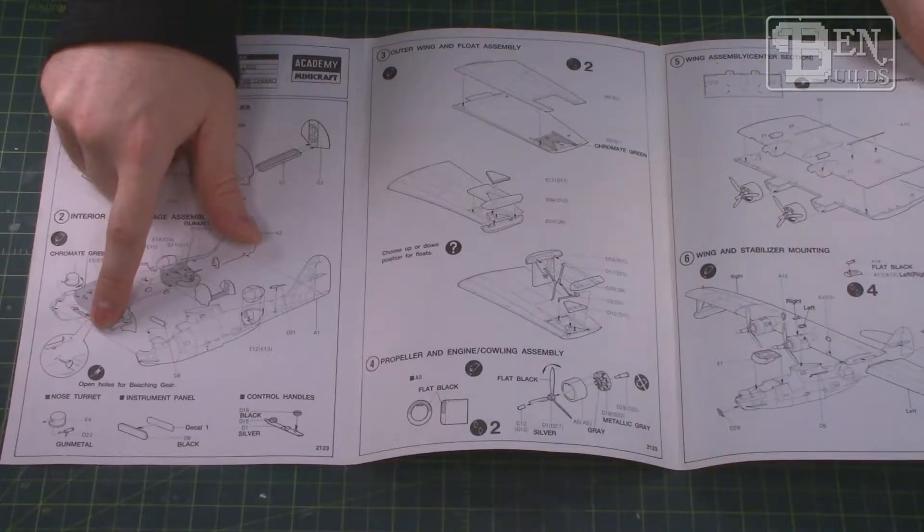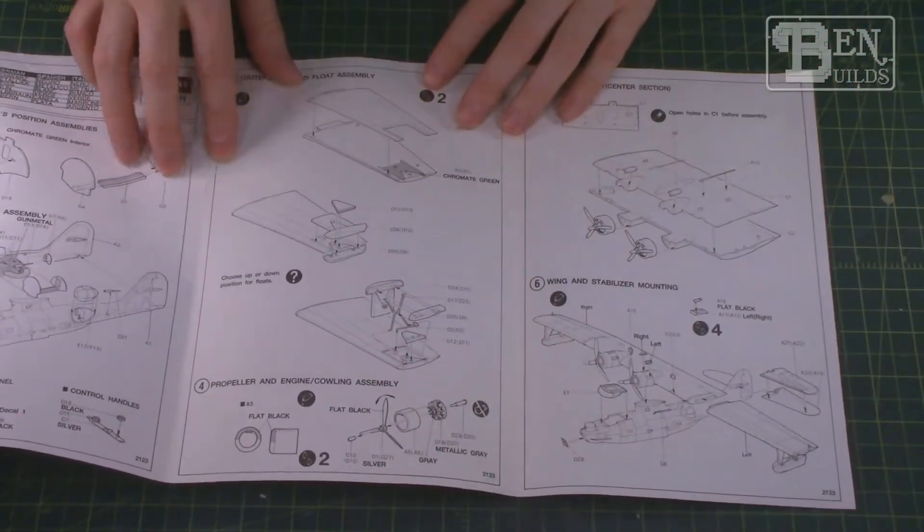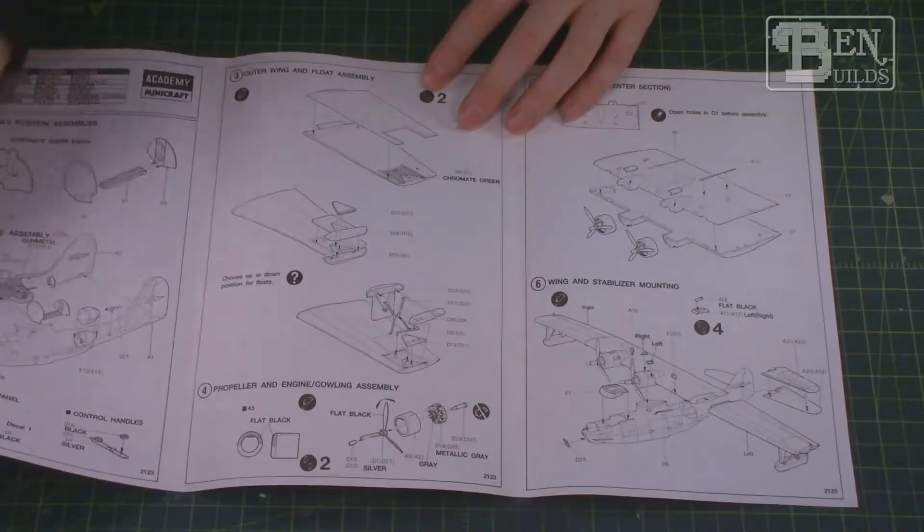And then of course also for the front turret and also for the rear side observation gunner positions. I don't know how much you're going to be able to see through those clear parts, but that might be a good opportunity for scratch building. Then of course we move on with the rest of the aircraft.